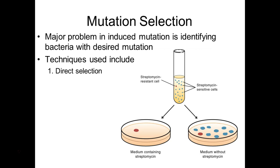Unless we're using transposable elements and specifically give them that resistance, sometimes we're doing mutations where we can't directly select. The mutation might actually put the mutant at a disadvantage — if we put it in a stressful situation, it doesn't grow, so we kill off the very thing we wanted to study. How do we identify it without killing it?